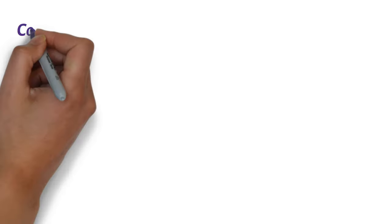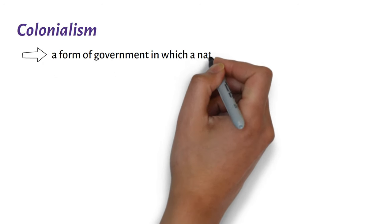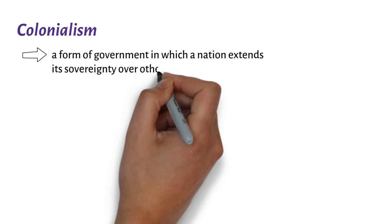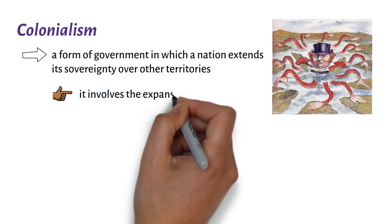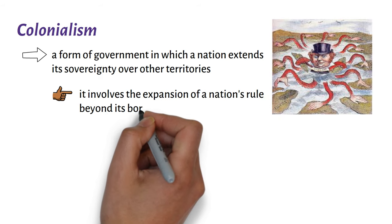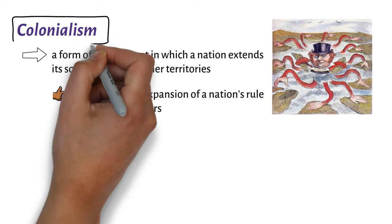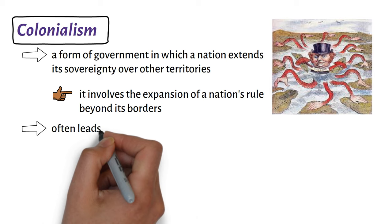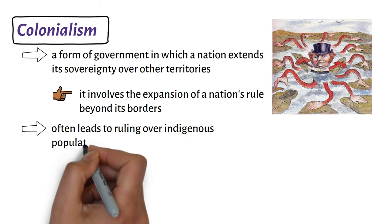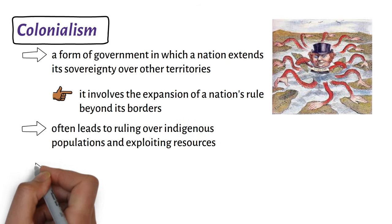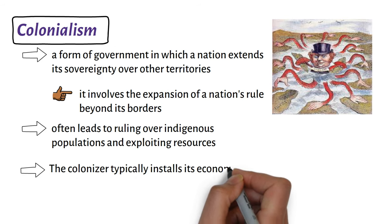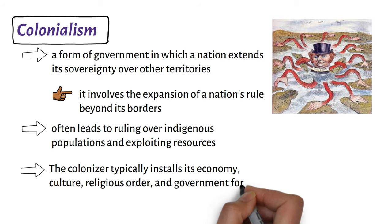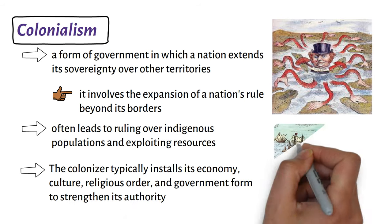On Colonialism. Colonialism is a form of government in which a nation extends its sovereignty over other territories. In other words, it involves the expansion of a nation's rule beyond its borders. Colonialism often leads to ruling over indigenous populations and exploiting resources. The colonizer typically installs its economy, culture, religious order, and government form to strengthen its authority.